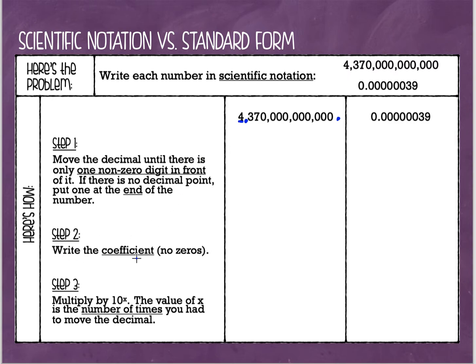All right, the next thing I'm going to do is I'm going to write the coefficient now. The coefficient is the number before the zeros start. So I'm going to write the four. I'm going to write my new decimal point that I moved over, and I'm going to write the three and the seven. And after that, I just have a bunch of zeros. So I'm not going to write them anymore.